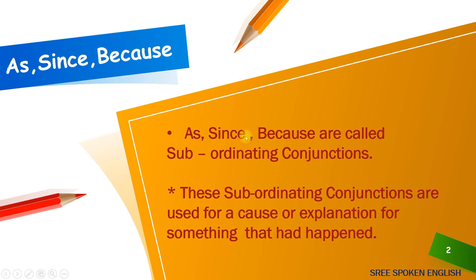So, what is as, since, because? As, since, because are called subordinating conjunctions. These subordinating conjunctions are used to give a cause or explanation for something that had happened.